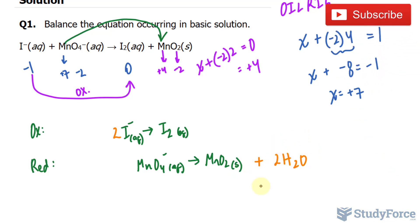but four hydrogens on the right side and none on the left side. So I'll write down 4H plus ions. That's how you balance hydrogens in these types of reactions.